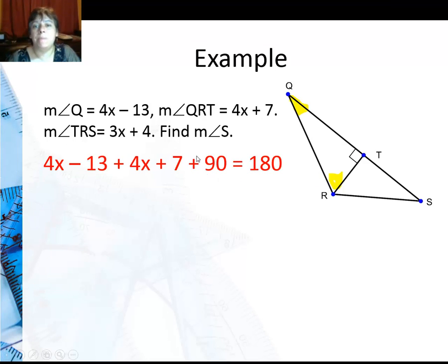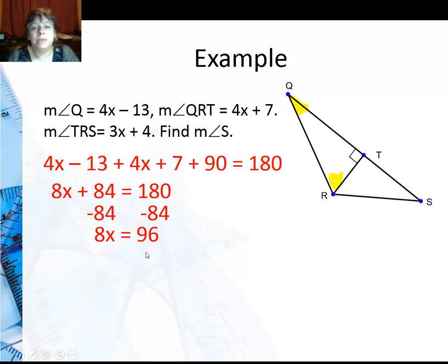So I add them all up, including the 90 degrees. I could have done a shortcut and said these two equal 90, but I'm going to keep it this way. Simplifying and combining like terms, I get 8X plus 84 is 180. Subtract 84 from both sides, I get 8X is 96 or X is 12.